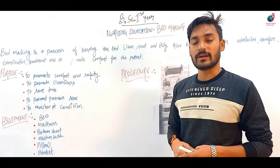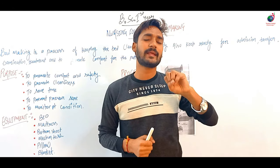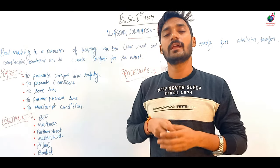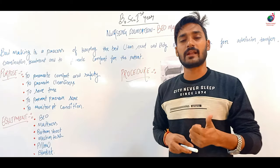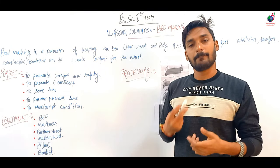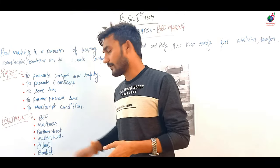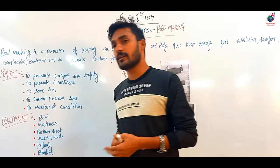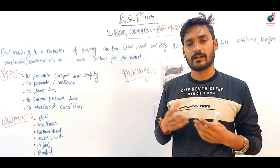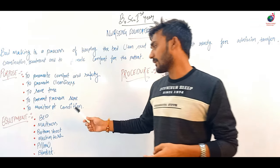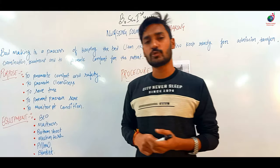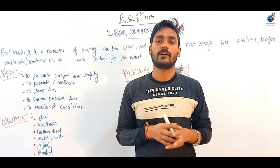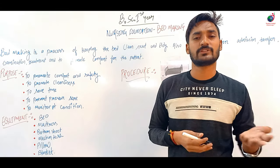Next, we see the equipment. When we are ready for bed making, we will need certain equipment. First, we will need one bed. Then, we will need a mattress. Next, we will need a bottom sheet, which goes on top of the mattress. Next, we will need a mackintosh, which helps protect the mattress and keeps it dry.